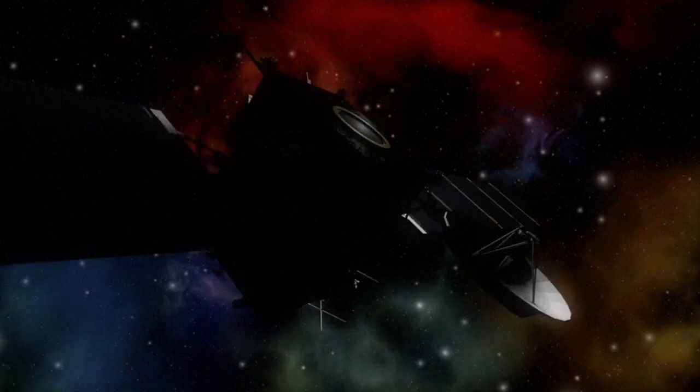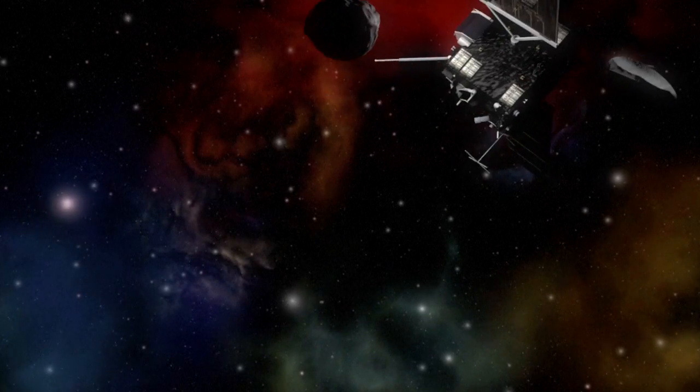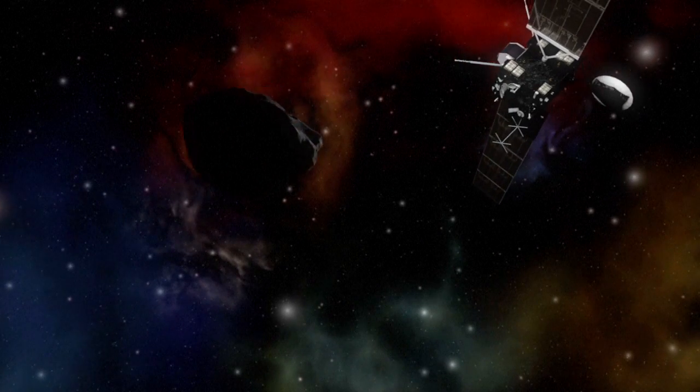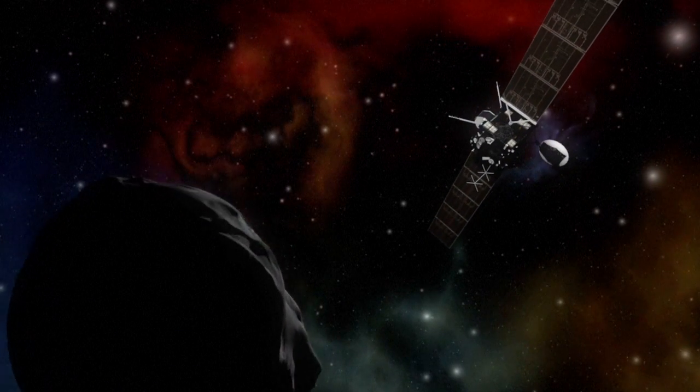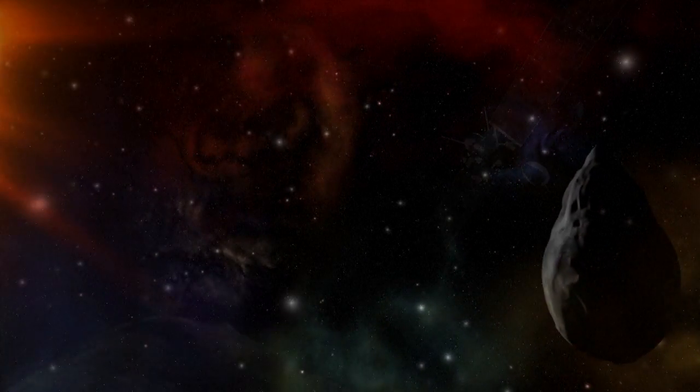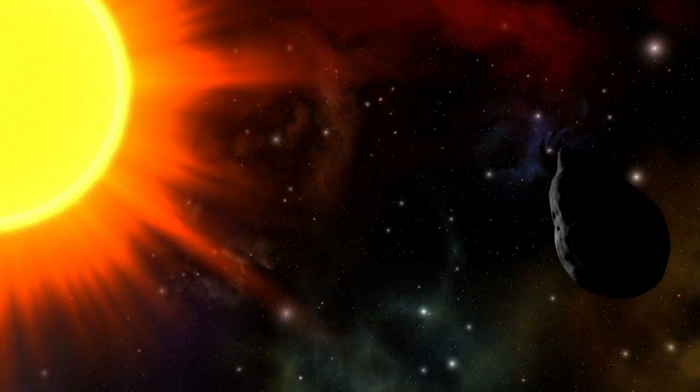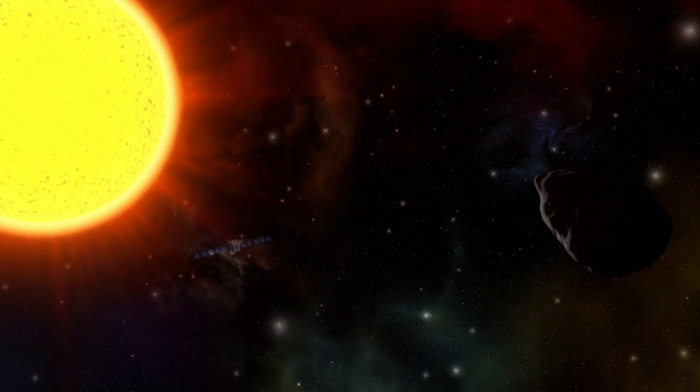After a 10-year chase through the solar system, crossing more than 6 billion kilometers, the European space probe Rosetta is closing in on its final destination, the comet Churyumov-Gerasimenko, nicknamed Chury by some scientists.